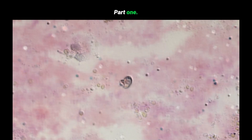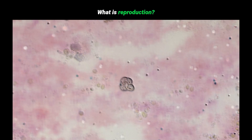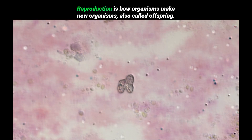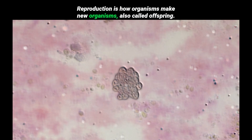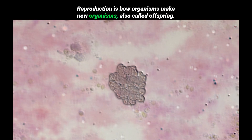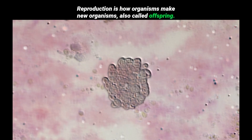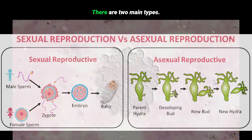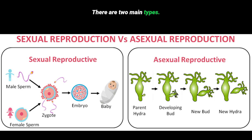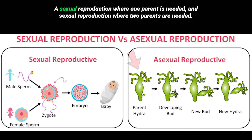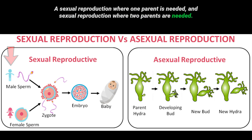Part 1: What is reproduction? Reproduction is how organisms make new organisms, also called offspring. There are two main types: asexual reproduction, where one parent is needed, and sexual reproduction, where two parents are needed.